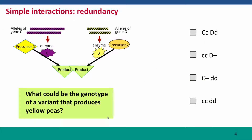Now, what could be the genotype of a variant that produces yellow peas? If the product is the green pigment normally found in green peas, what could be the genotype of a variant that instead produces yellow peas?